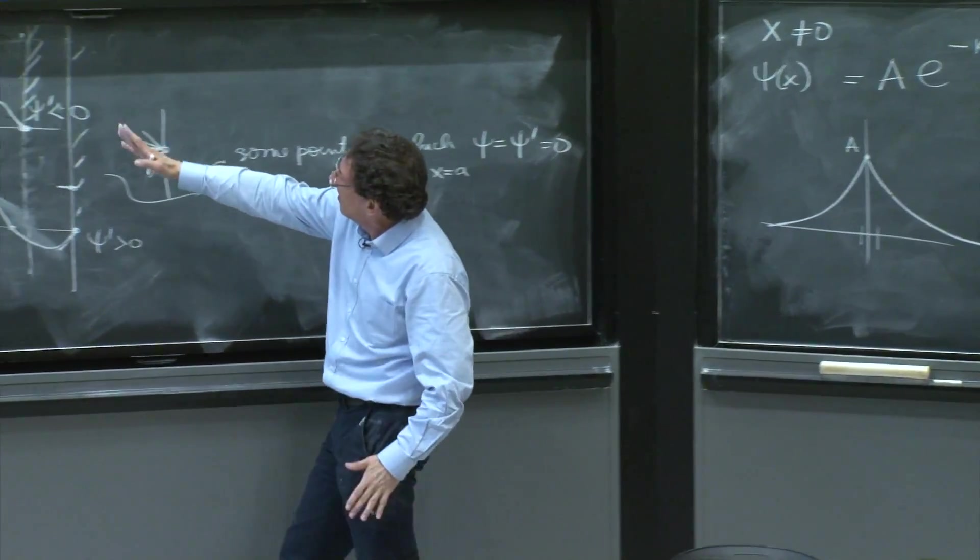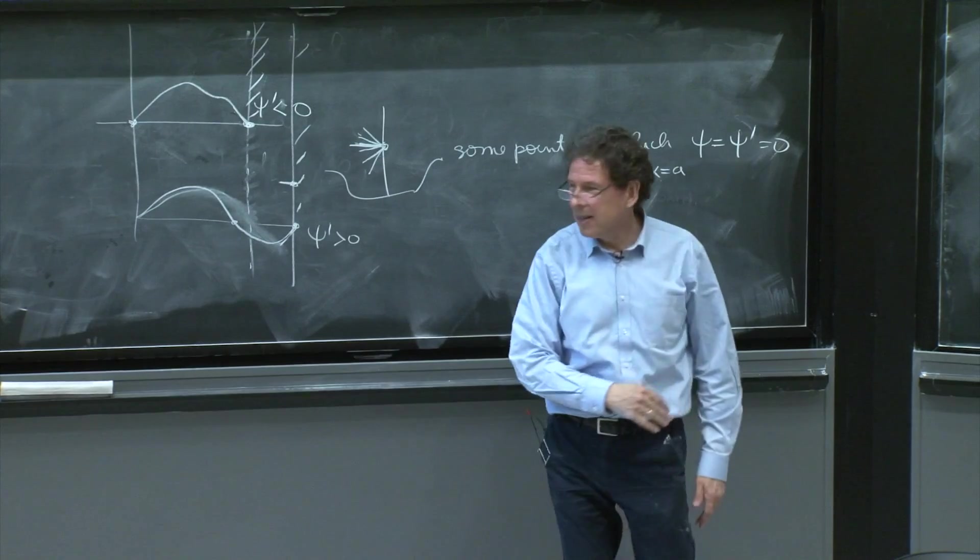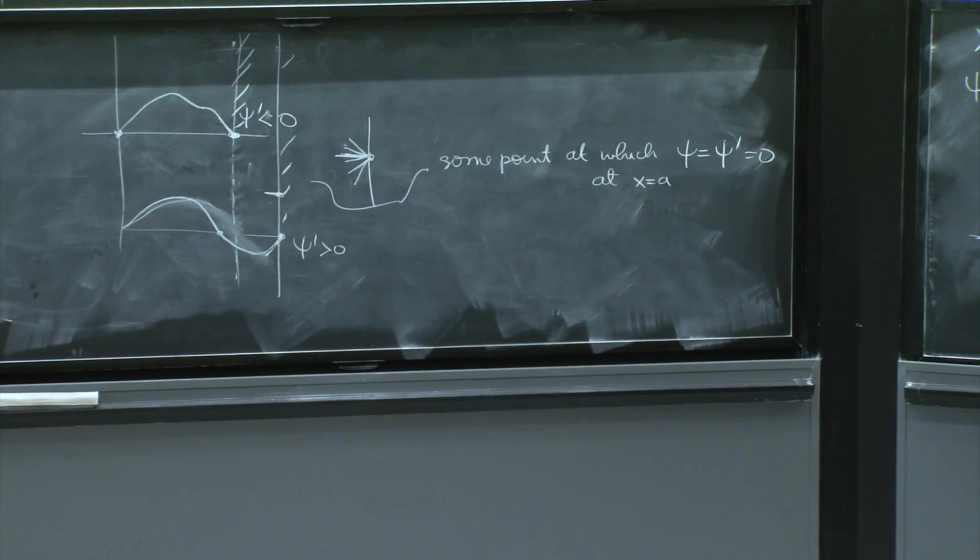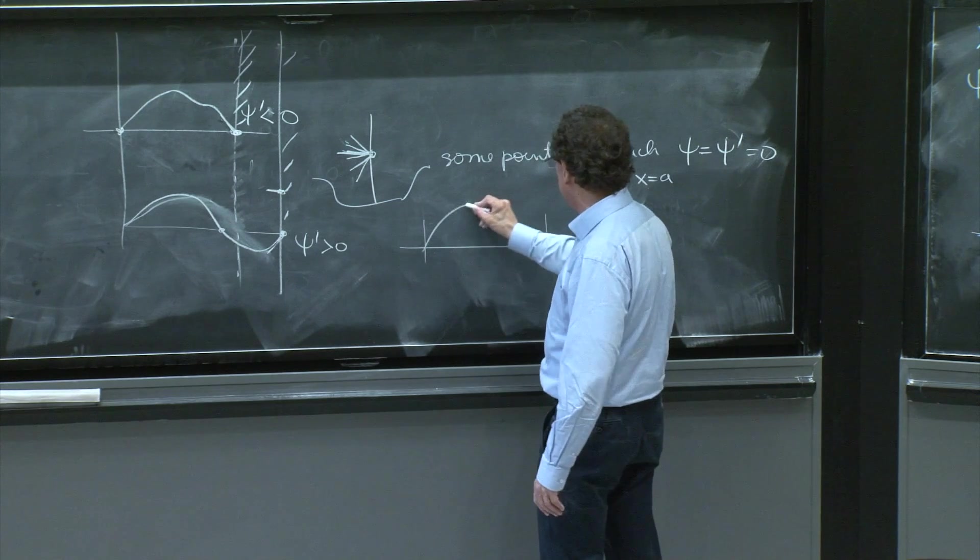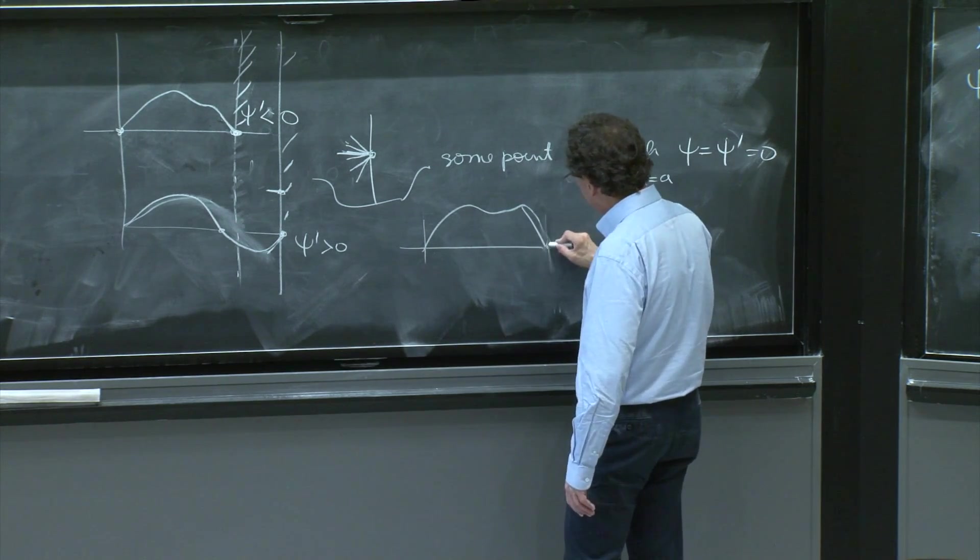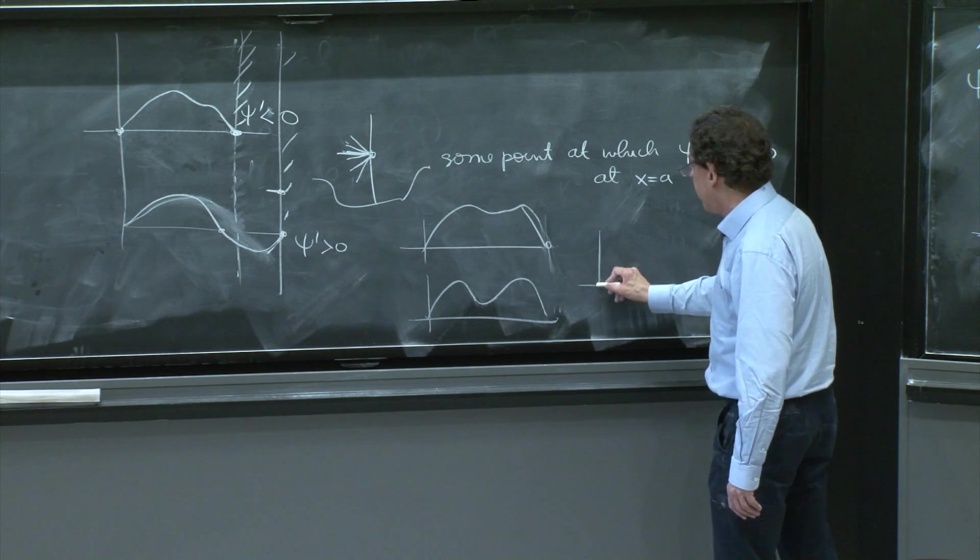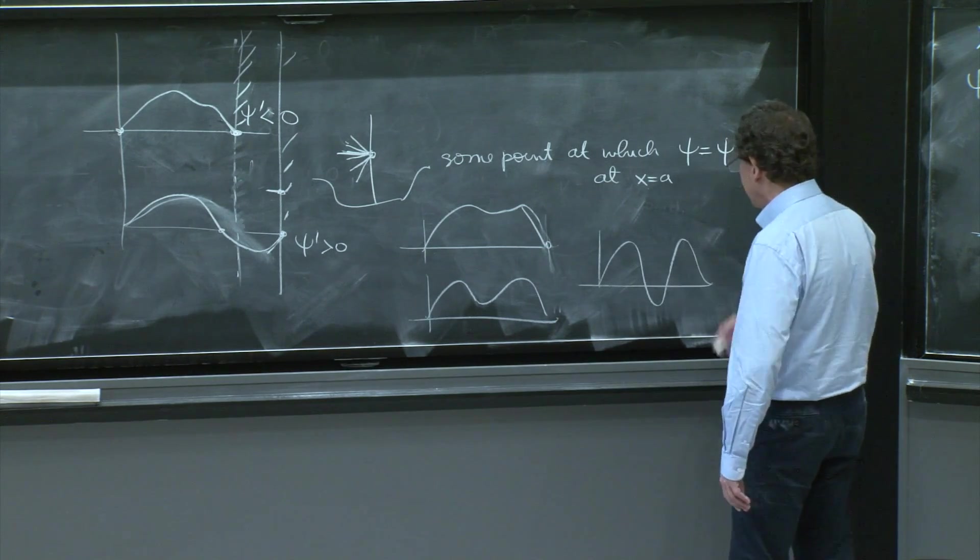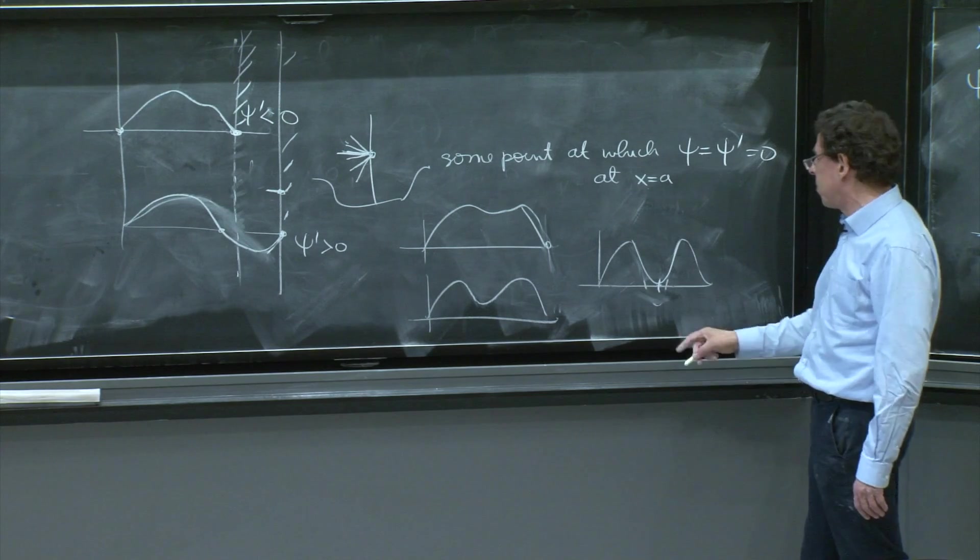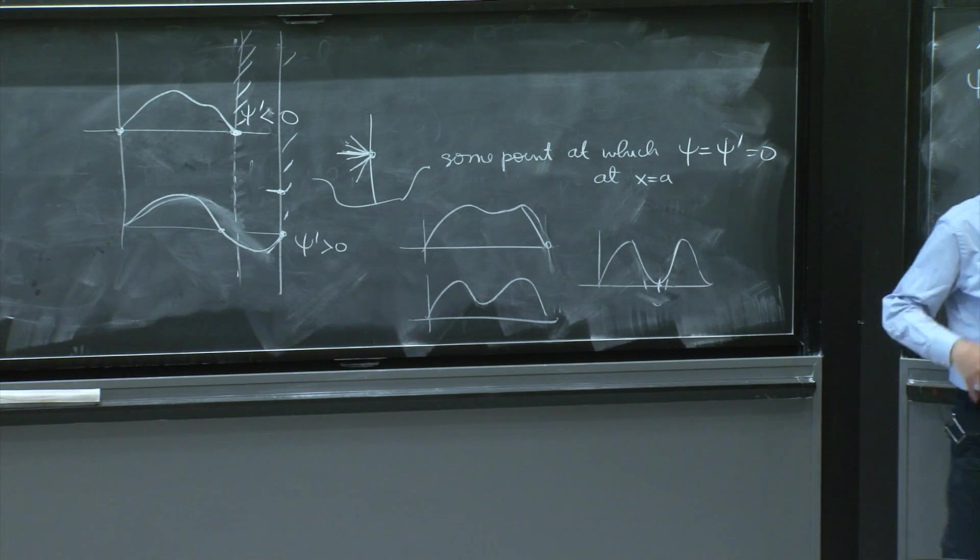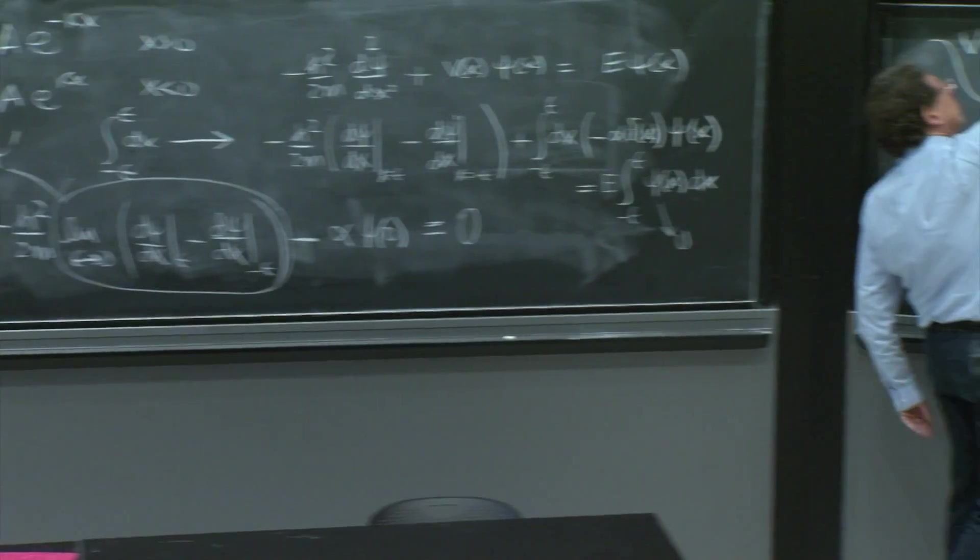So basically, you can't quite flip this and produce a node, because you would have to flip here. And you can't do it. One could try to make a very precise rigorous argument. But if you have another possibility, you might think, well, you have this wave function, maybe, and then suddenly it starts doing this. And at some stage, it's going to try to do this. But before it does that, at some point, it will have to be just like this and cross. But at this point, ψ and ψ prime would be 0. So you can intuitively convince yourself that this thing doesn't allow you to produce a node.